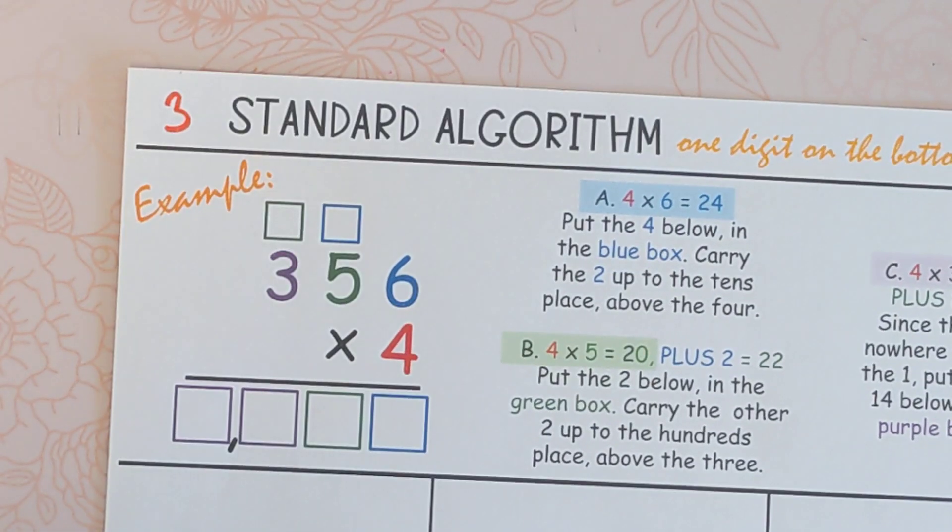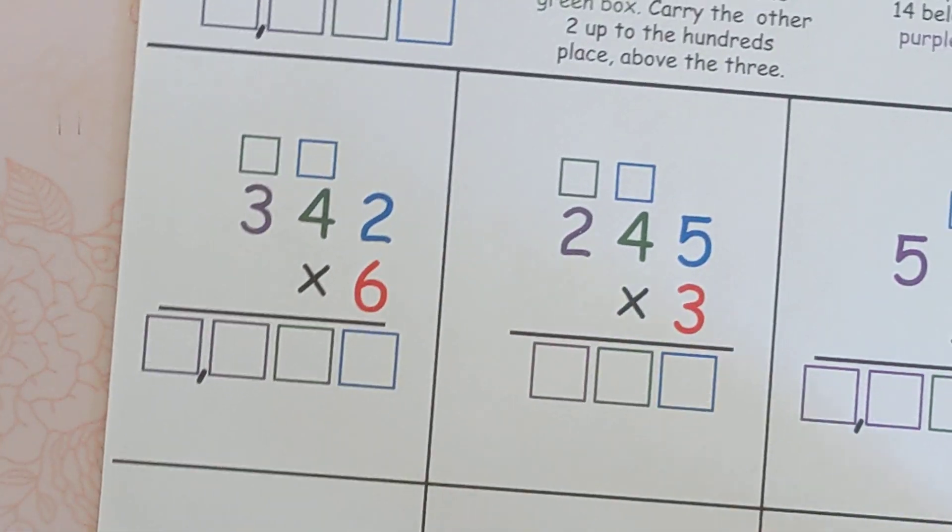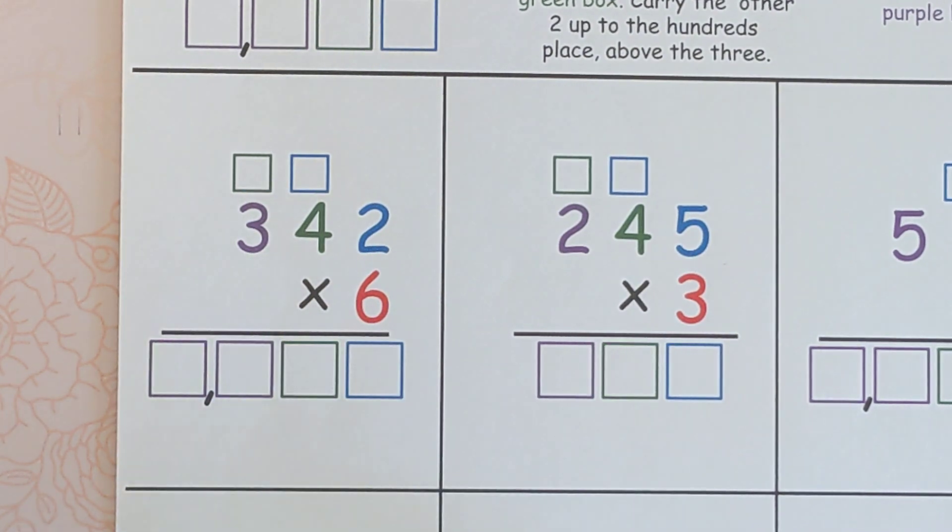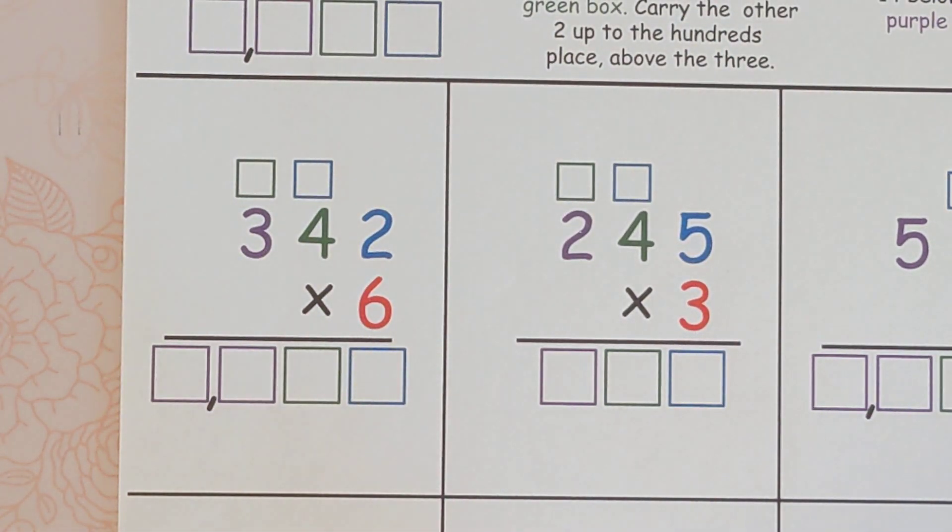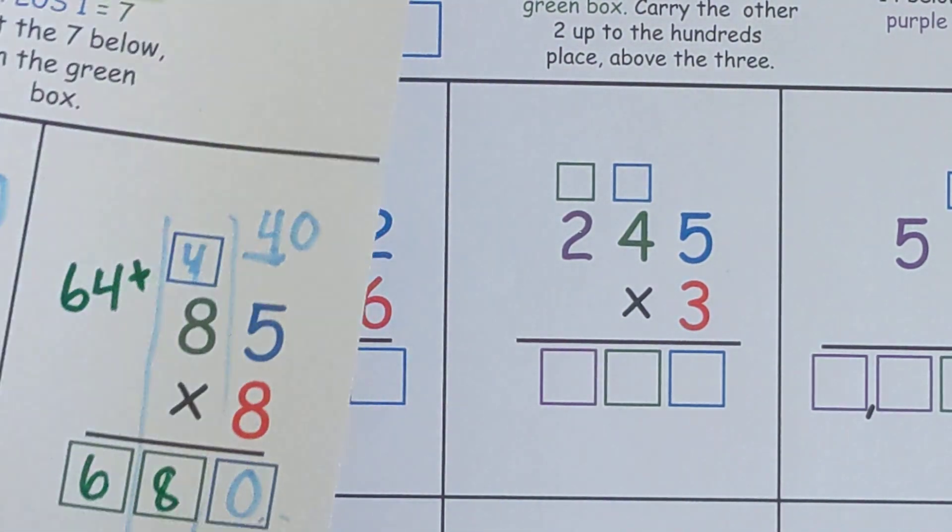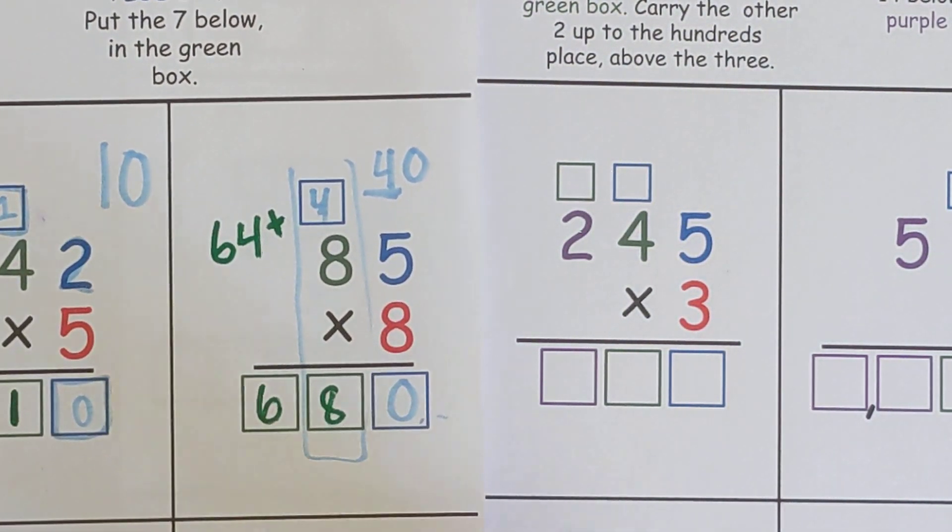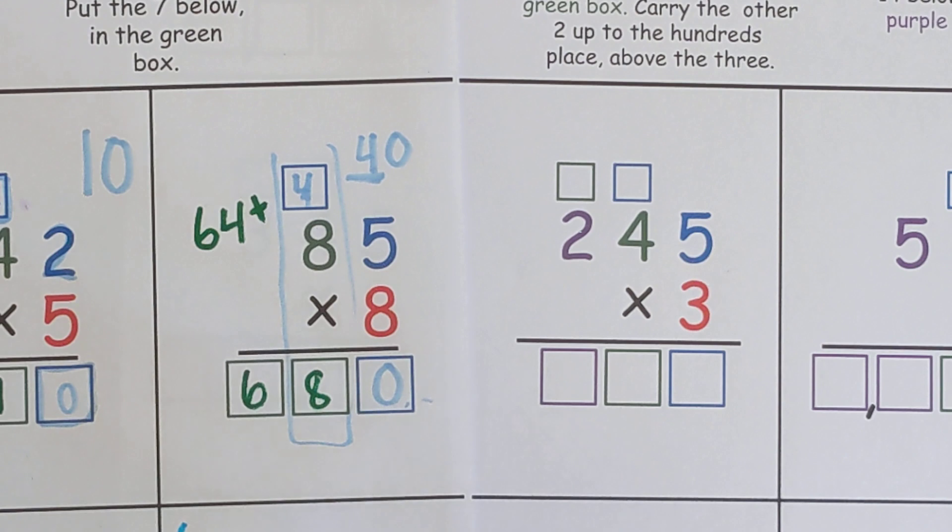All right, today we're going to do the standard algorithm. It is three digits on top and one digit on the bottom. And if you have done two digits on top and one on the bottom, it's actually almost the same thing.